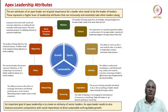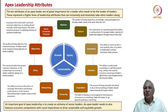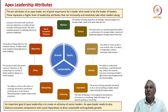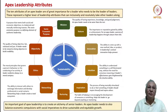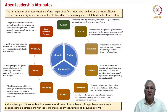An apex leader should also have good stature. Stature is the importance or reputation gained by ability or achievement. For an apex leader, exercise of leadership happens through stature rather than title. It is not because someone is the CEO that people follow them — it is because the incumbent has such stature that it compels others to follow and listen.